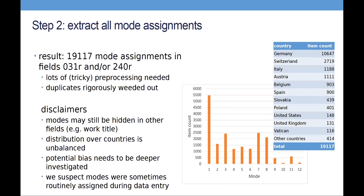We ended up with 19,000 separate modal assignments in those fields. A lot of tricky pre-processing was needed, and we had to rigorously weed out duplicates. Some disclaimers: modes may still be hidden in other fields such as title fields, and the distribution over countries is very unbalanced — we have 10,000 modal assignations from Germany, then nearly 3,000 from Switzerland, and from there it goes down. The distribution over the different modes 1 to 12 is also very unequal; one-sixth of all modal assignations are mode 1 pieces from Germany. There is definitely bias — sometimes modes were routinely assigned during data entry, and almost never plagal modes. Nevertheless, we can do things with them.